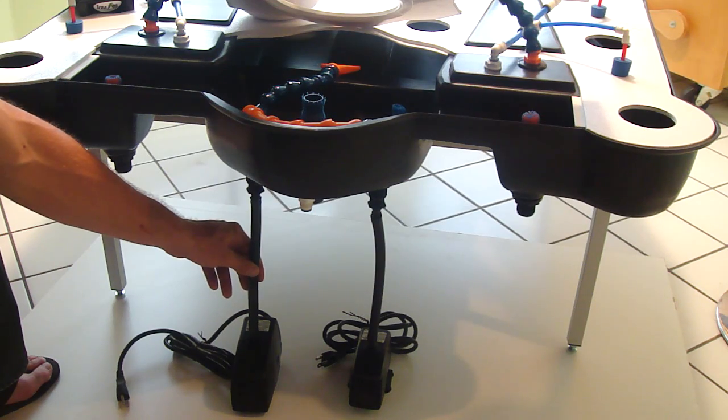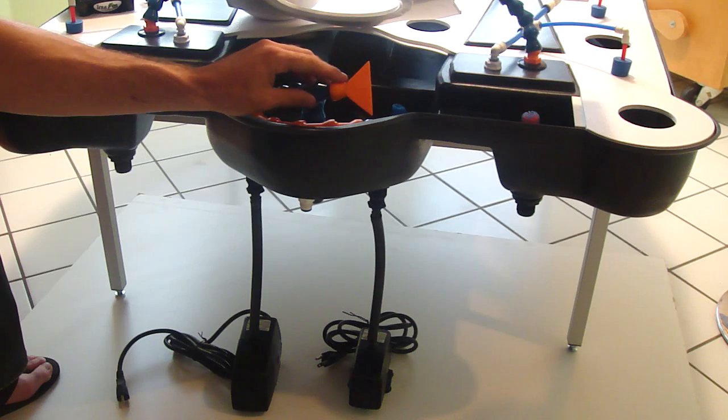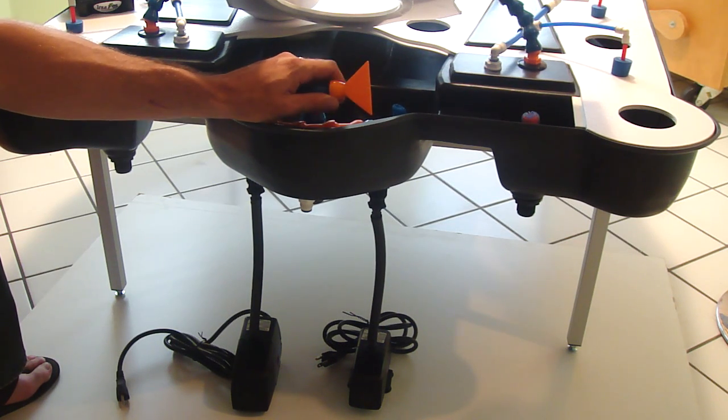You're going to have the 400 gallon per hour pump. That one goes into the ebb and flow or NFT, the tray filling nozzle. So you get a little bit more flow out of the 400 gallon per hour.